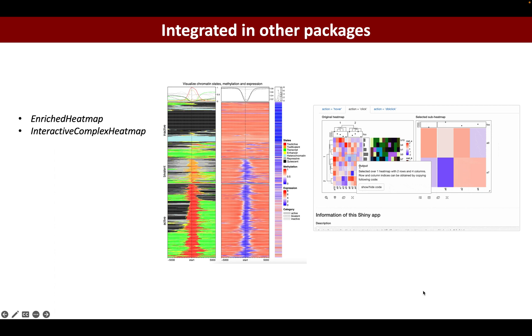The second package is InteractiveComplexHeatmap package which can very easily convert a static heatmap produced by ComplexHeatmap to an interactive shiny application.